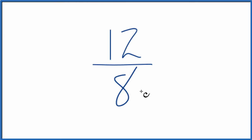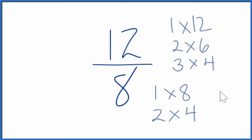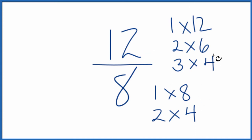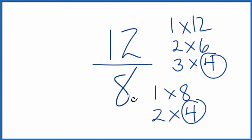Here are the factors for 12 and 8. Looking at them, it looks like the greatest common factor is 4. So we can divide 12 by 4 and 8 by 4, and we'll have simplified 12 over 8.